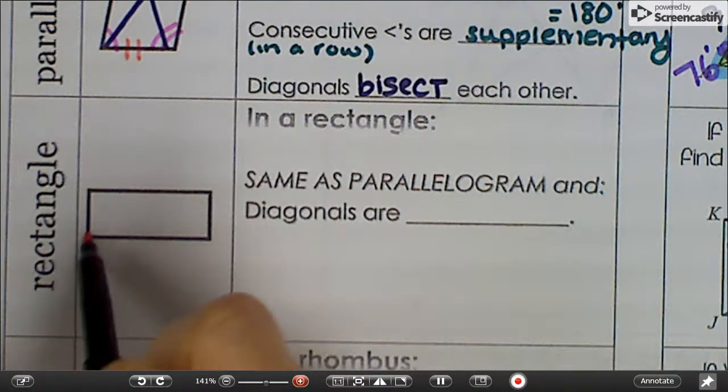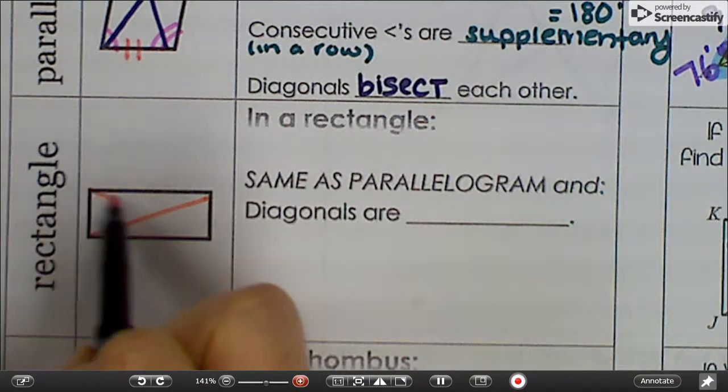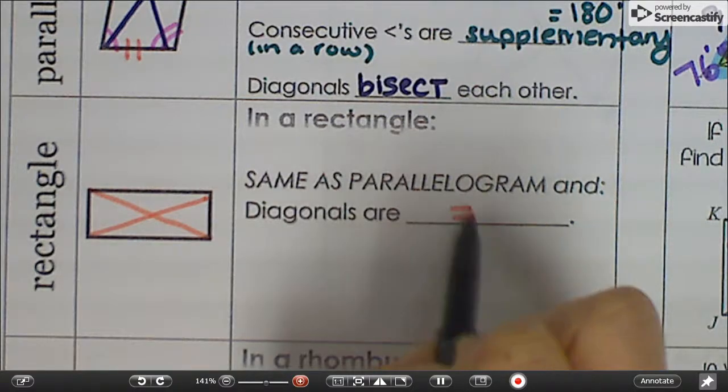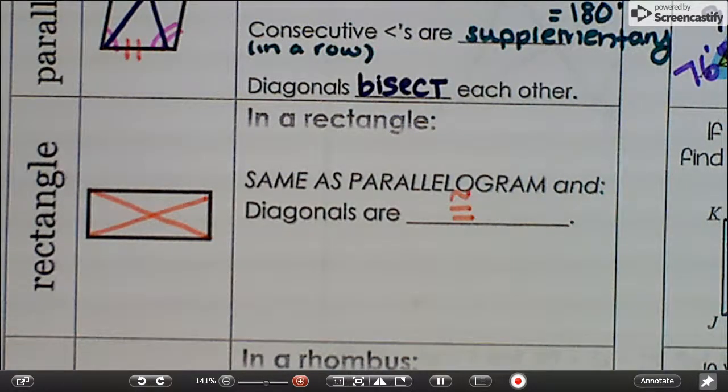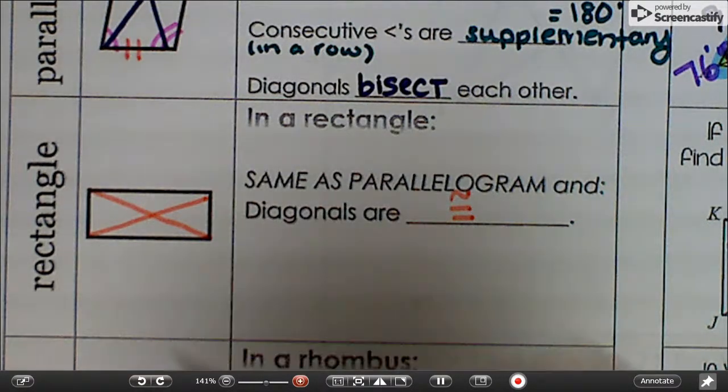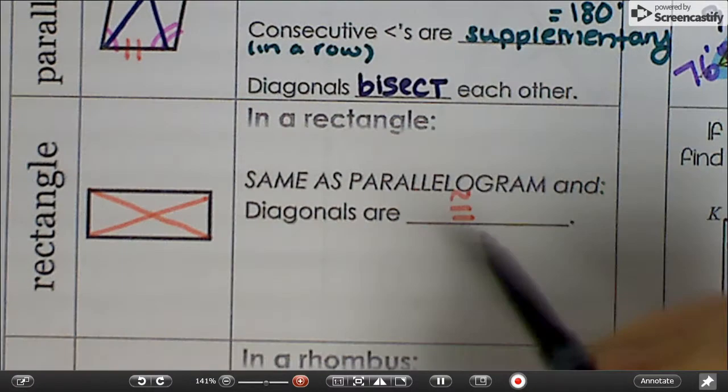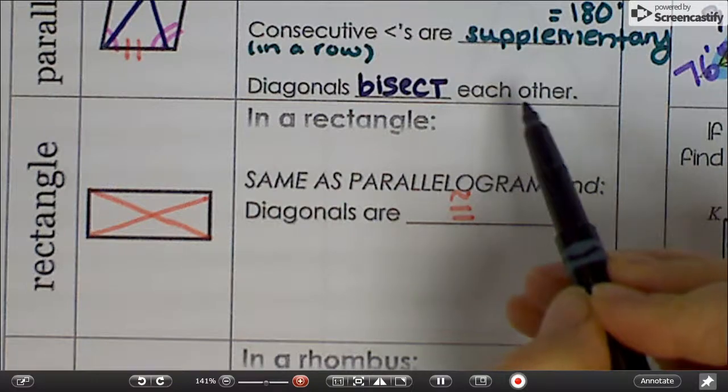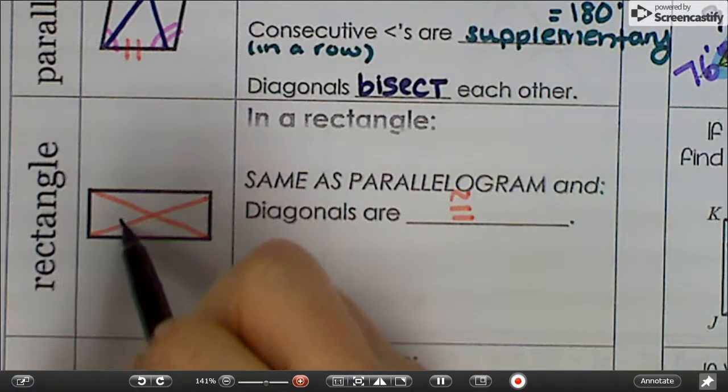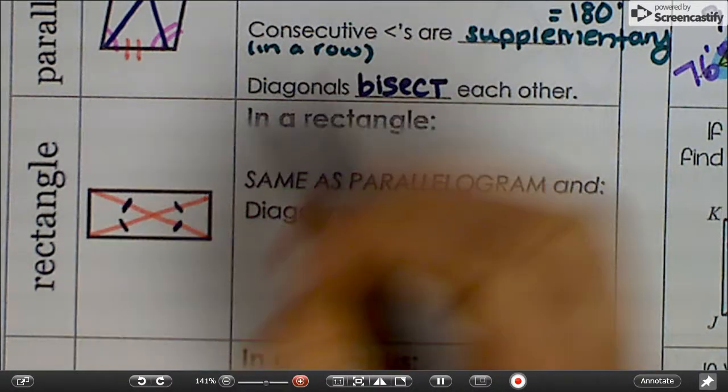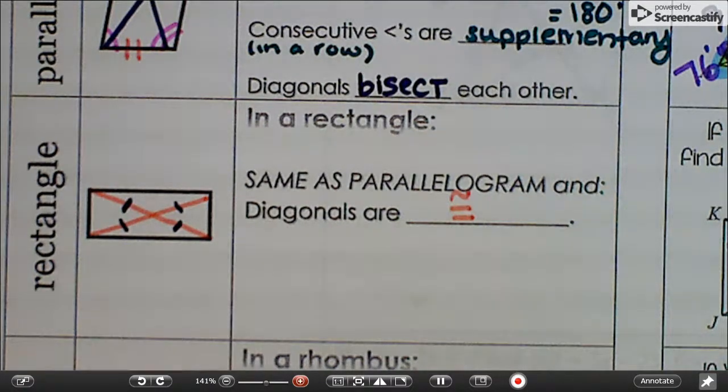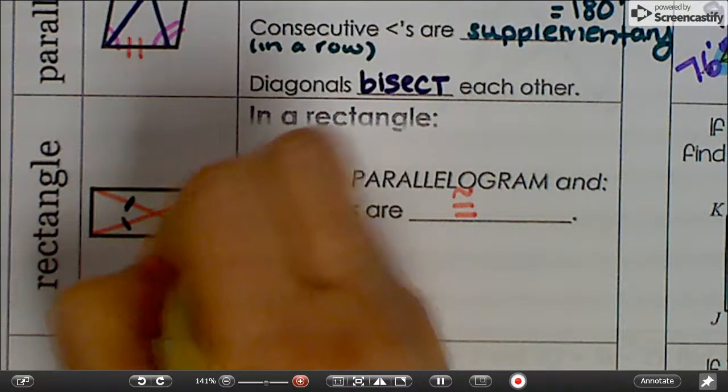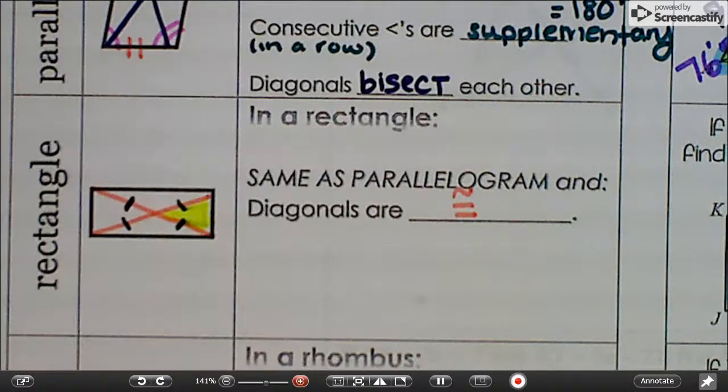But this time, the diagonals are congruent. What that means is that, hold on, let me go back. In all parallelograms, diagonals bisect each other. So all these pieces are the same as each other. All right, and look how cool this is. Here's an isosceles triangle. And there's other ones. Do you see them? Hopefully you see them all.